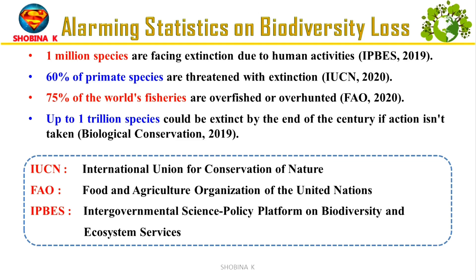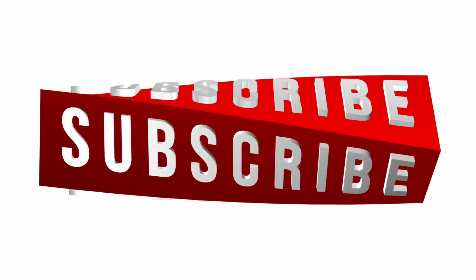Alarming statistics related to biodiversity and conservation include: 1 million species at risk of extinction due to human activities, 60% of primate species threatened with extinction, 75% of the world's fisheries overfished or over-hunted, and up to 1 trillion species could be extinct by end of the century if no action is taken. These numbers show we must act now to stop biodiversity loss and protect ecosystems.